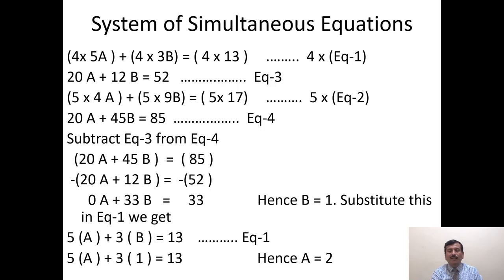The entire equation 1 is multiplied by 4, equation 2 is multiplied by 5. Then we realize that in equations 3 and 4, which are equivalent to equations 1 and 2, the coefficient of A is 20 in both. Now we subtract equation 3 from equation 4.